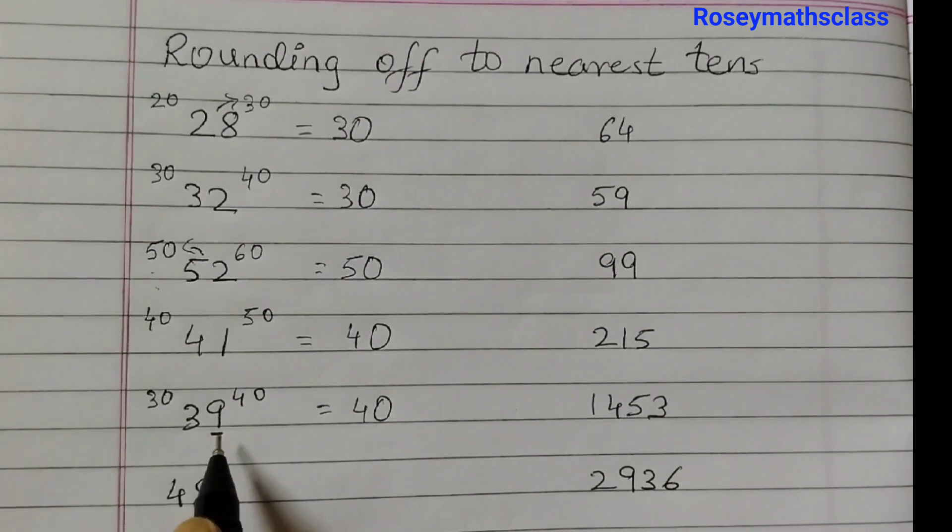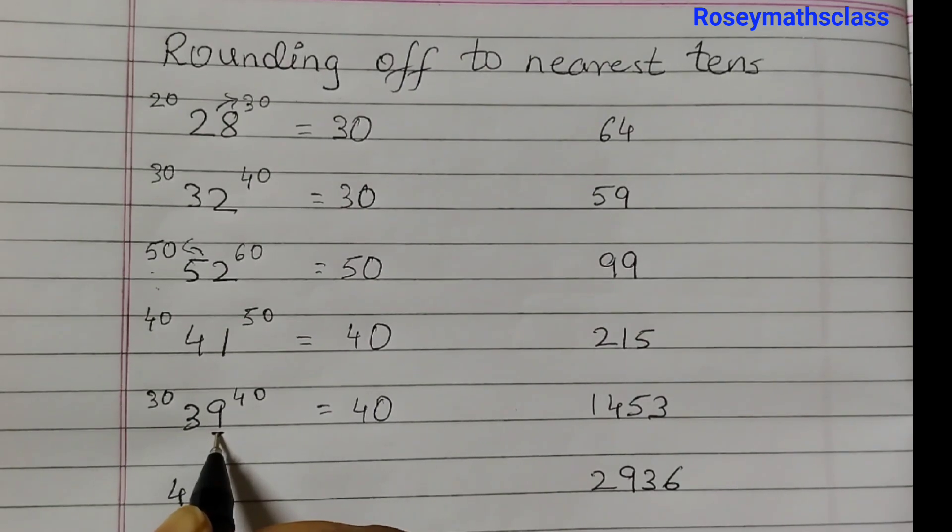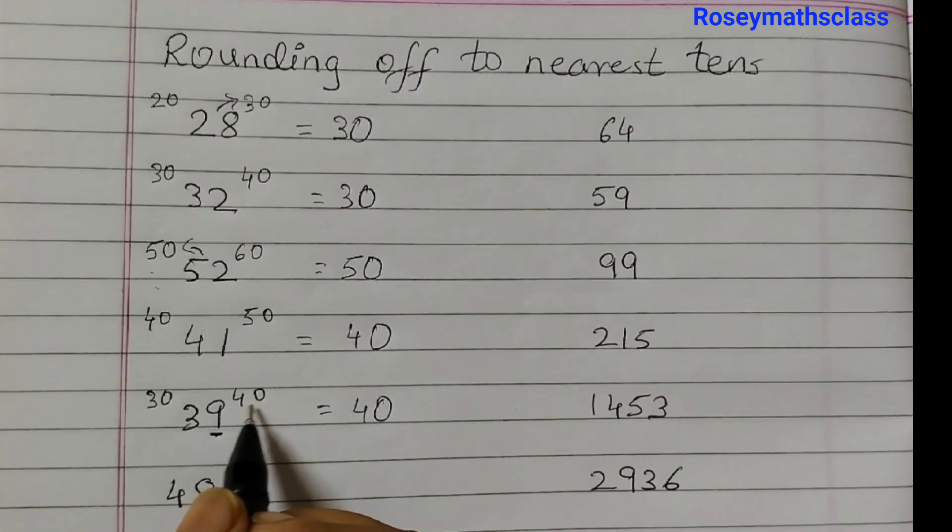And see, this is 9. So whenever it's 5 or greater than 5, that would be rounded off to the next bigger number.